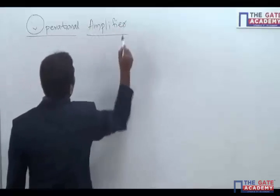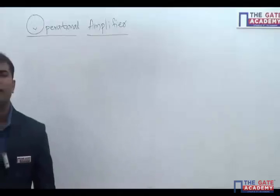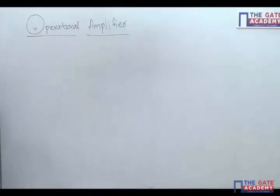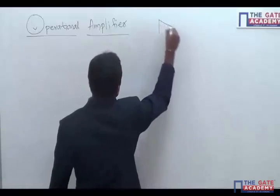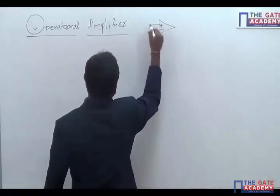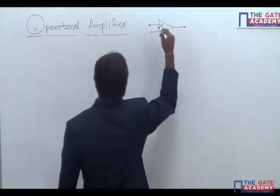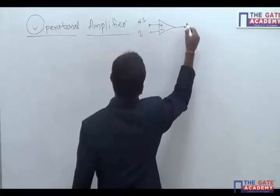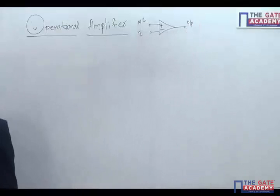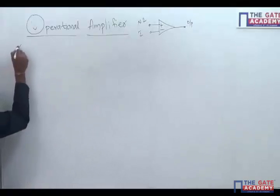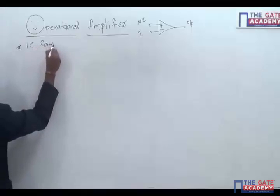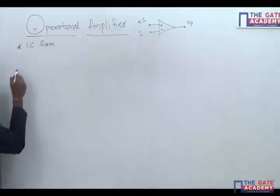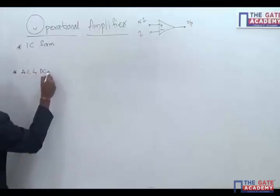Operational amplifier. As far as an operational amplifier is concerned, it is a building block as far as analog circuits are concerned. This is its corresponding symbol — non-inverting and this is your output terminal. First thing to understand is it is in an IC, integrated circuit form. It is a versatile device which acts as both AC as well as DC amplifier.